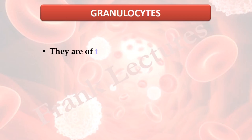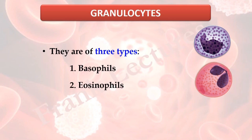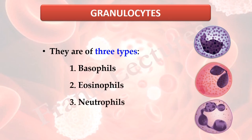Granulocytes are of three types: 1. Basophils, 2. Eosinophils, 3. Neutrophils. The basis of this classification is the difference in their cellular morphology and the staining of their cytoplasmic granules.